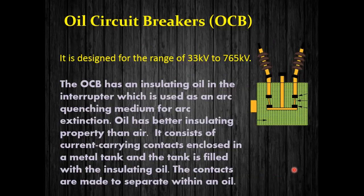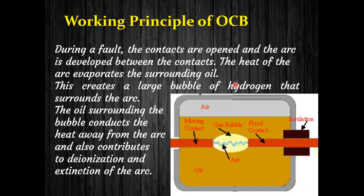The oil circuit breaker (OCB) is designed for 33 kilovolts to 765 kilovolts. The OCB has insulating oil in the interrupter which is used as an arc quenching medium for arc extinction. Oil has better insulating properties than air. The interrupter chamber consists of current-carrying contacts enclosed in a metal tank filled with oil.